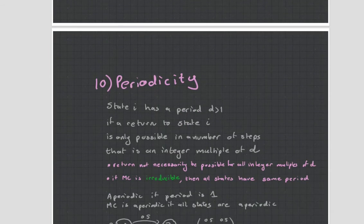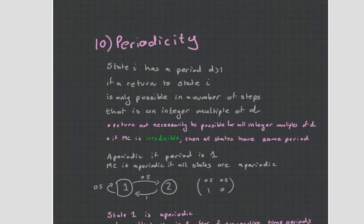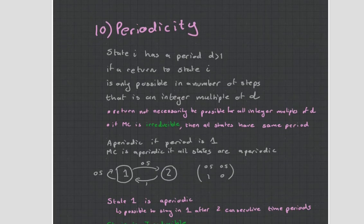Then you have this thing called periodicity, and this is a little bit tricky. I struggled a little bit with this one. What it says is state i has a period of d, which is greater than 1, if a return to state i is only possible in a number of steps that is an integer multiple of d. Some of you will be like, oh Mark, that's so simple. Others of you are going to be like, what on earth did you just say there? And the best thing to do is just to have a little bit of an example. So let's look here at this model we have here.